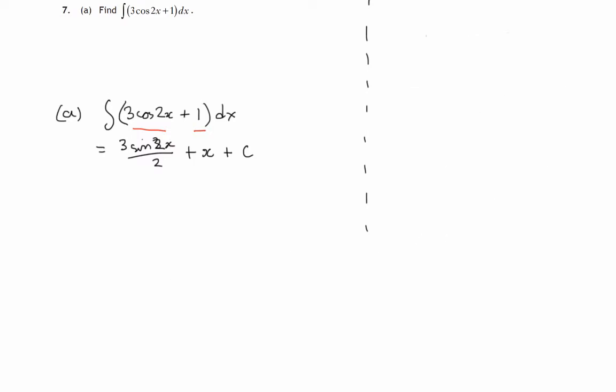So let's move on now to part b, and it's a trig identity that we have to solve. We have to show that 3cos2x plus 1 is the same as 4cos²x minus 2sin²x.